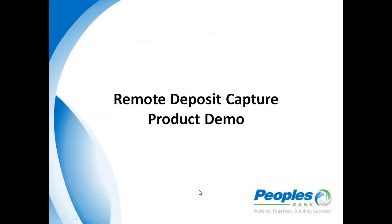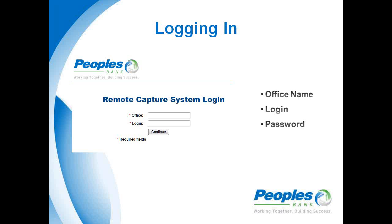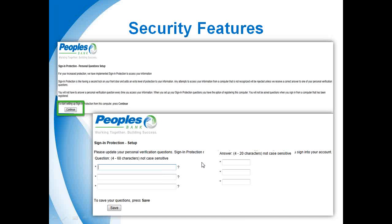Our remote deposit capture product gives you the capability to scan your checks from your desktop and electronically send those to Peoples Bank. For login information, you will receive an office name — generally your business name, possibly abbreviated — a login ID specific to you as a user, and a temporary password. You'll enter those into the system and click continue. We do have multi-factor authentication with multiple layers, and one thing you'll be asked to do one time is create three challenge questions.